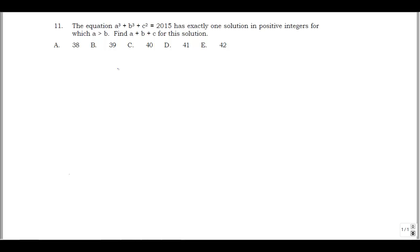This is question 11 from the 2015 AMATX Student Math League contest. The question states the equation a cubed plus b cubed plus c squared equals 2015 has exactly one solution in positive integers for which a is greater than b, and we want to find a plus b plus c for this solution.